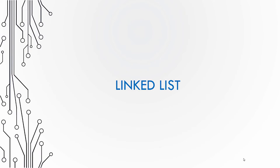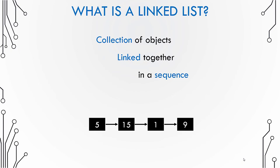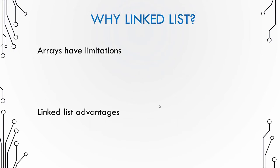Let us talk about linked lists. A linked list is a collection of objects linked together in a sequence. We have four objects — 5, 15, 1, 9 — linked in sequence. A linked list is kind of similar to an array, but linked lists remove array limitations. One limitation of an array is fixed size; in a linked list there is no fixed size. Another limitation is that it is costly to add elements in between array positions.